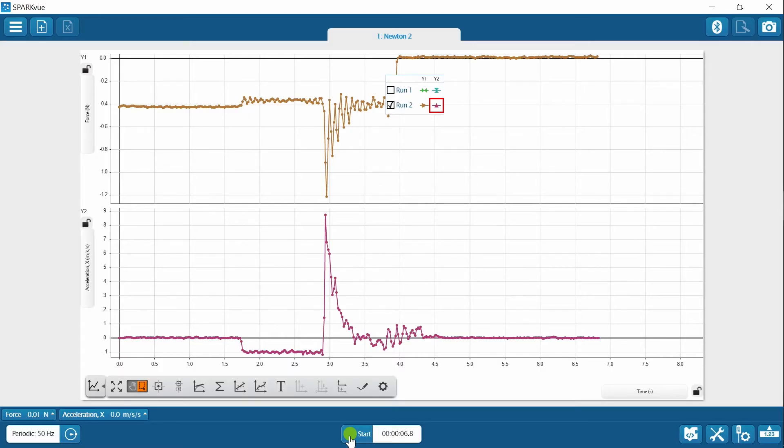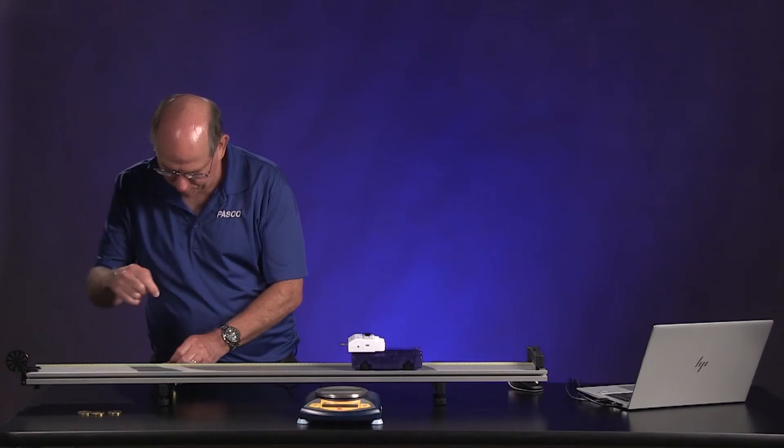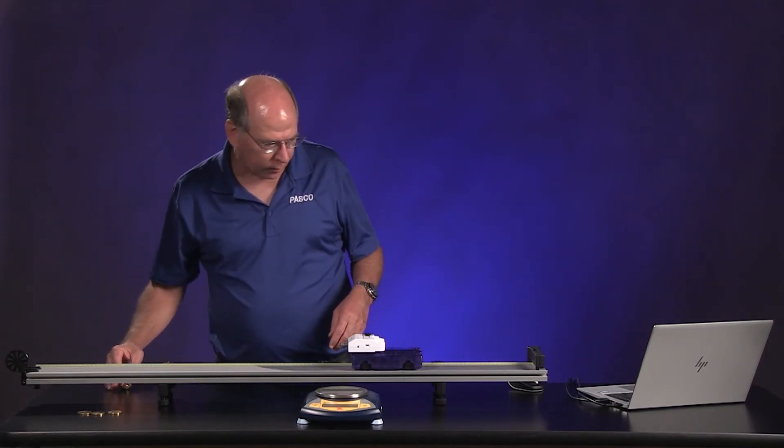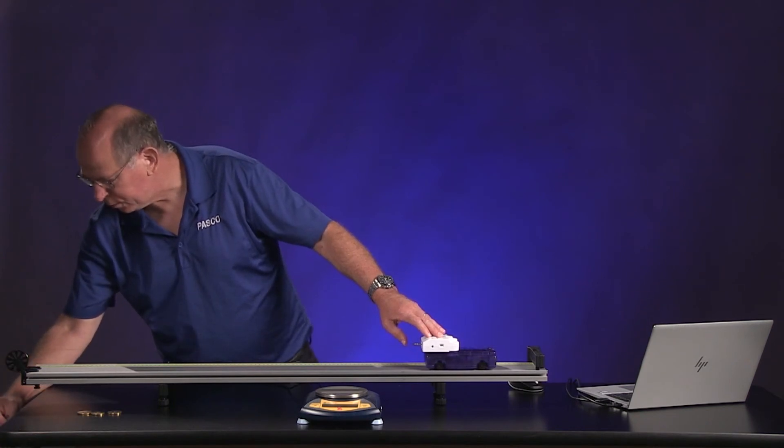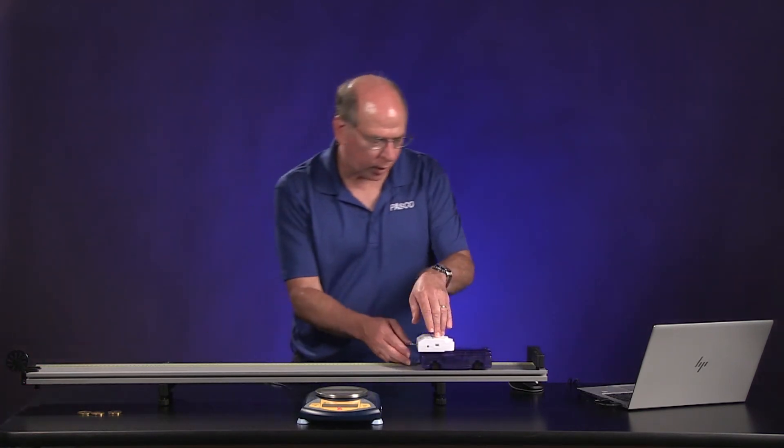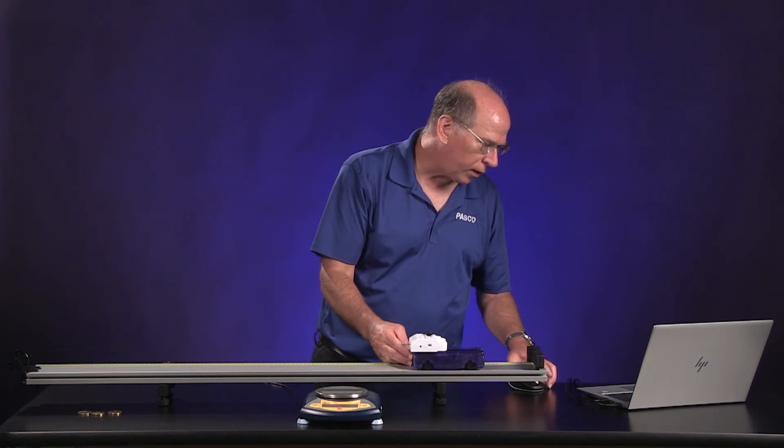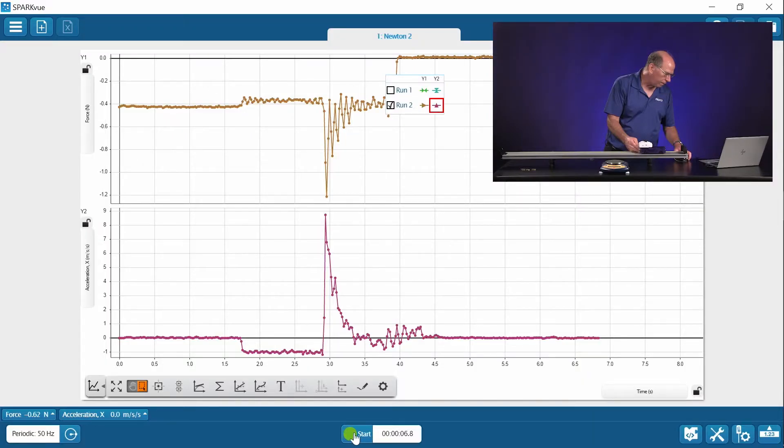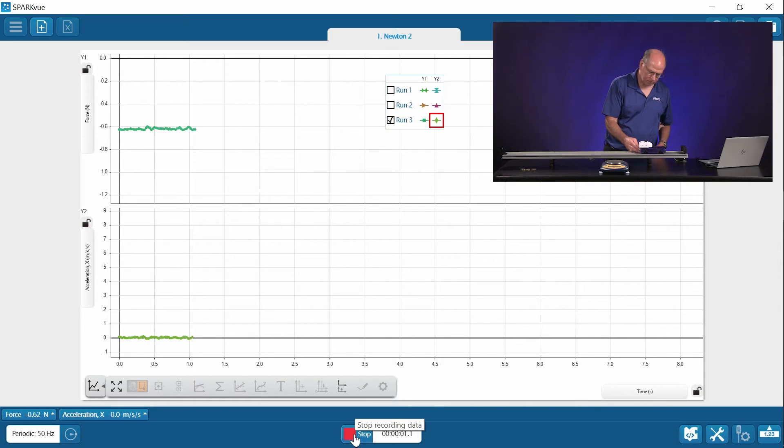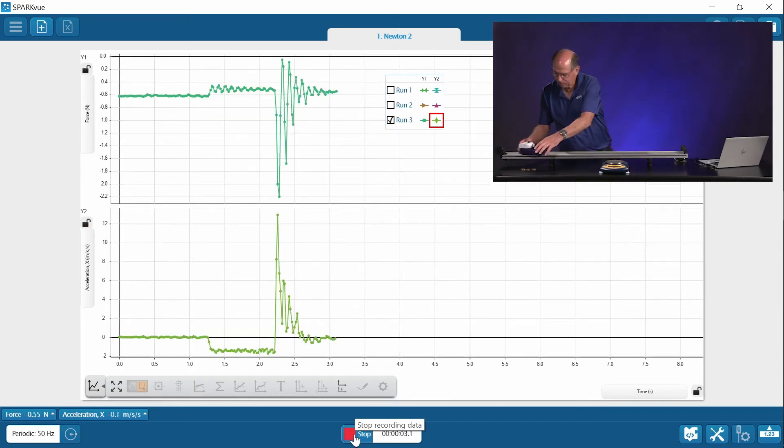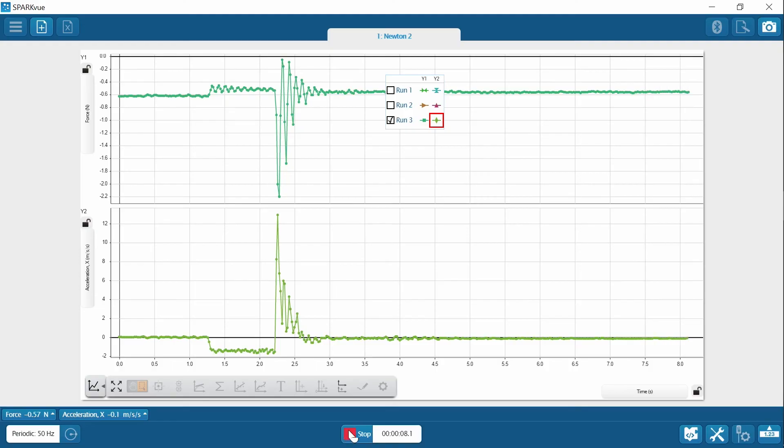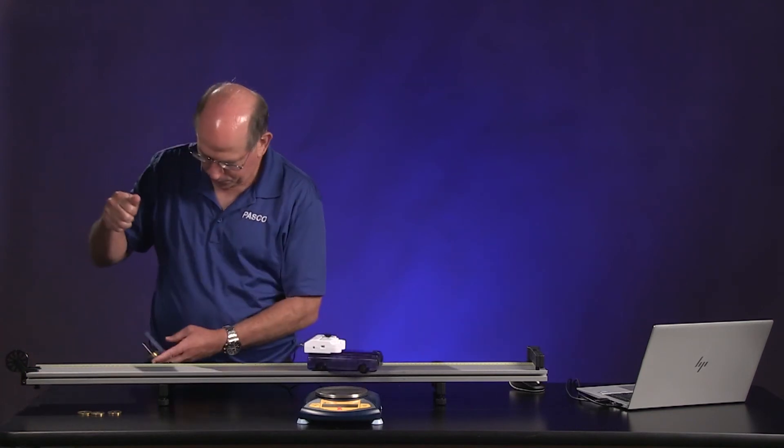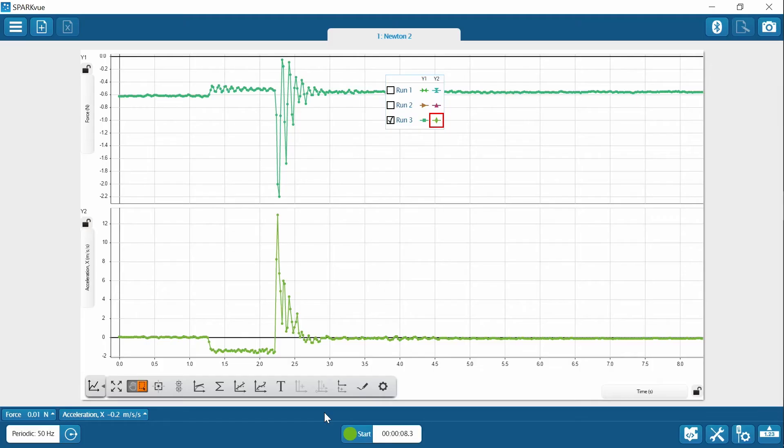So it's trial two. Now, as we add more and more, you might guess the acceleration is going to increase. And so we have to be pretty careful to keep the cart from flying off the track. So that's trial three.